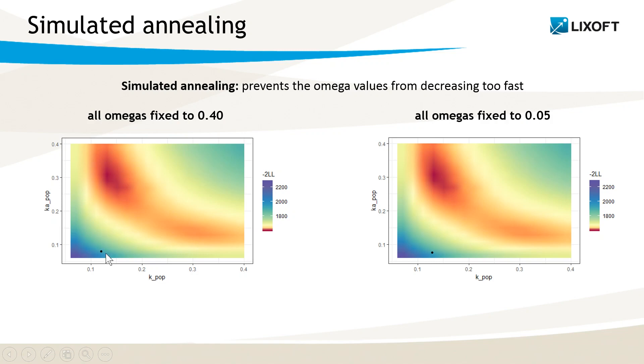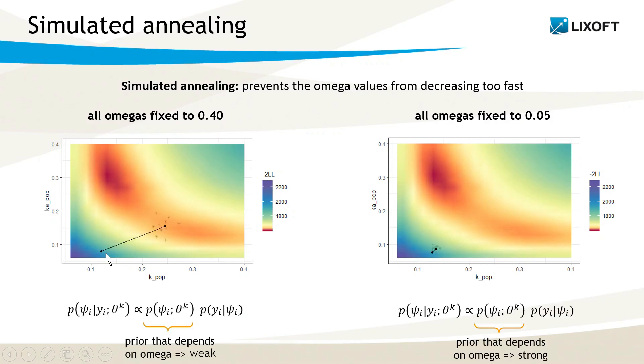The black dot represents my initial values. For the first step of the SAEM iteration, we sample the individual parameters from their conditional distribution. This conditional distribution is proportional to these two terms.